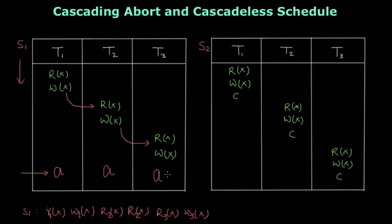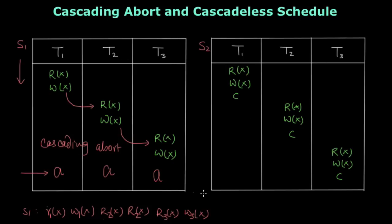This cascading abort is very costly because many transactions are aborted. This is a strictly avoidable case. This is basically called cascading abort — the transactions are aborting one by one, so this abort is cascading, that's why we call it cascading abort.